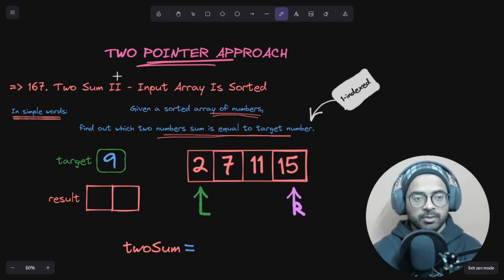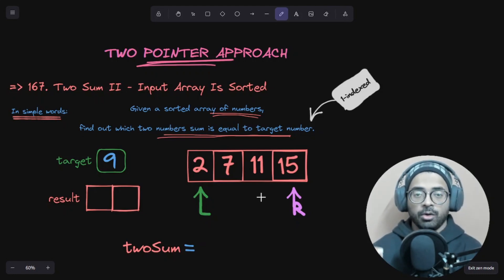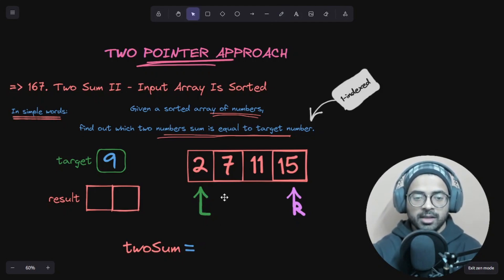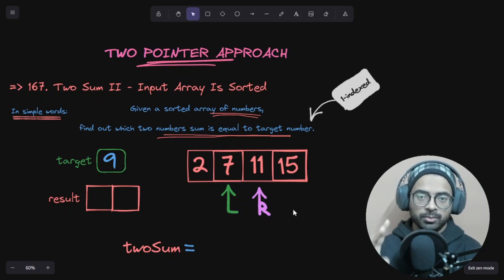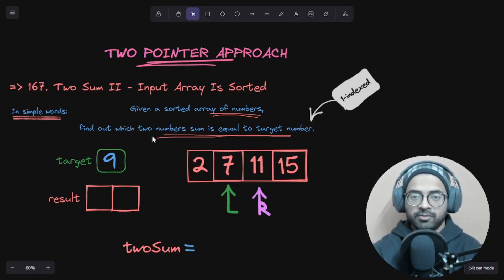Today we are going to discuss the two-pointer approach. As we discussed yesterday, in the two-pointer approach we use two pointers, and thanks to the two pointers we either compare two elements in a given array or we swap two elements in a given array. The two-pointer approach can also be used to partition an array, and it is not necessary that the pointers start from corners — it can be possible that pointers start from the center. It depends on the use case, but the main gist is that you have to use two pointers rather than one. The best use case is to avoid nested loops: rather than using a nested loop we use a single loop, and thanks to this two-pointer approach we solve questions like the one we are going to discuss today.